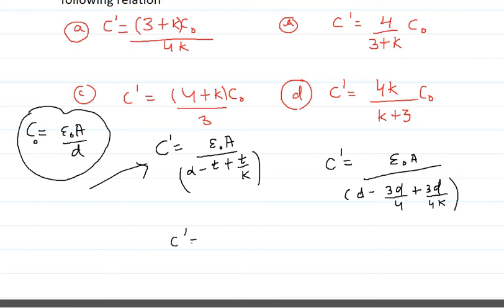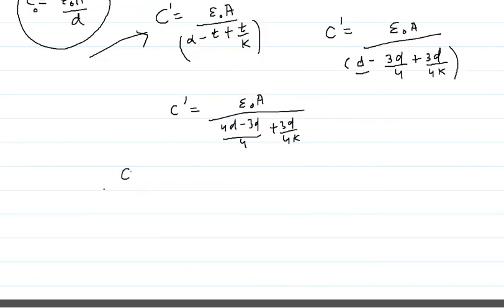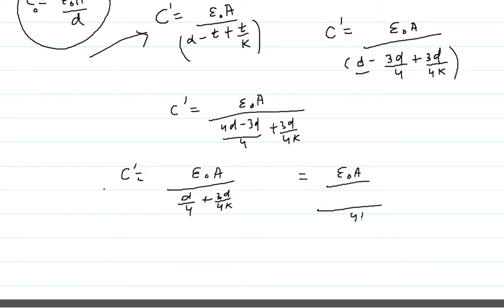Taking the LCM, C' equals epsilon naught A divided by (4d minus 3d) upon 4, plus 3d by 4K. This simplifies to C' equals epsilon naught A divided by (d/4 plus 3d/4K). Taking LCM again in the denominator gives 4K in the numerator and (dk + 3d) in the denominator, so C' equals epsilon naught A times 4K divided by d(K plus 3).